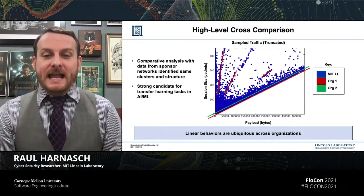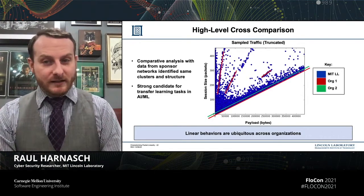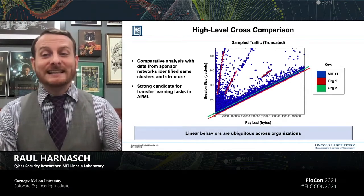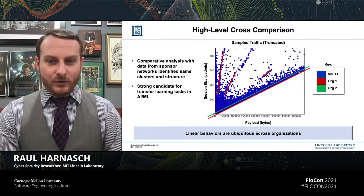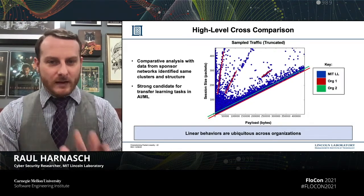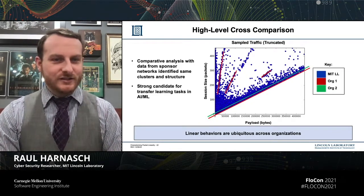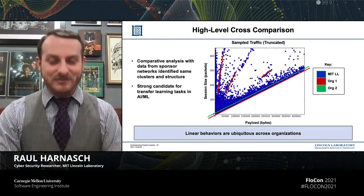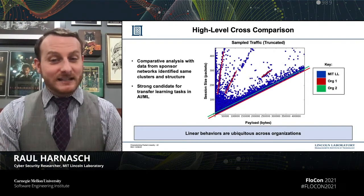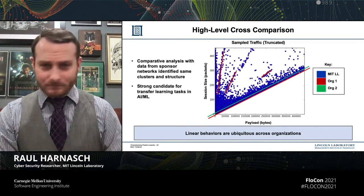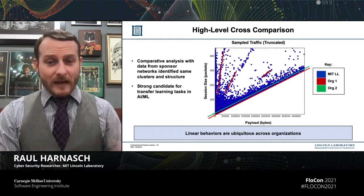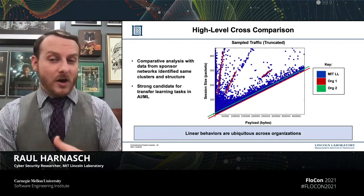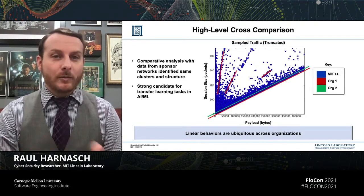This behavior isn't limited to MIT Lincoln Laboratory. The clustering and demarcation line is ubiquitous across organizations we've collected data from — we have two different sponsor government organizations that have given us data that both contain the same clusters and the same demarcation line. That makes it clear that this is a candidate for transfer learning tasks: we can train a model on network data from one organization and deploy that model anywhere else that has operational relevancy.